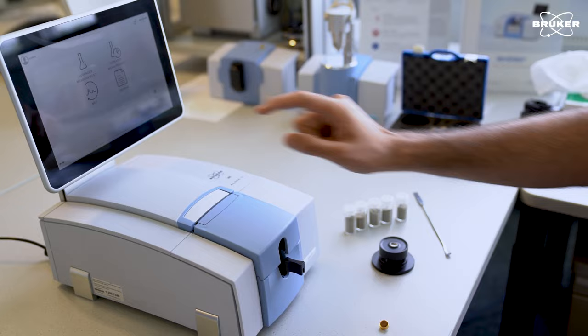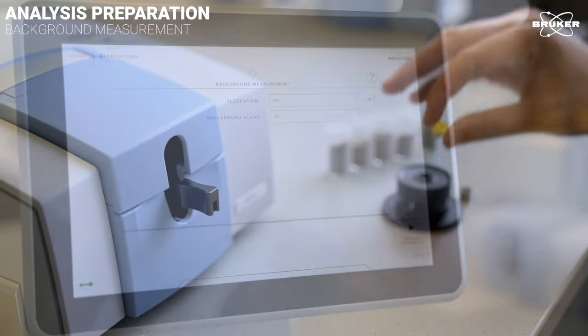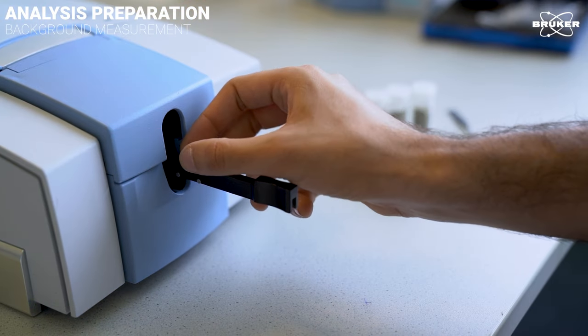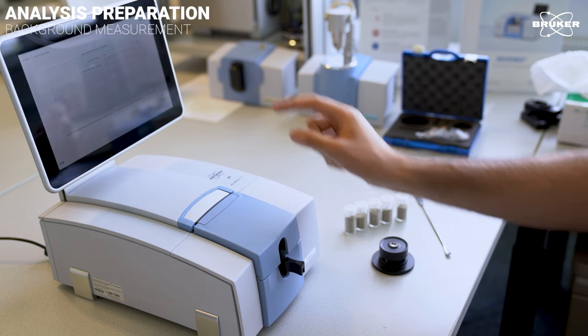But first, we have to measure the background to prepare the device for the actual sample measurement. We can then use this background for multiple samples in quick succession. A gold mirror will serve as a reference and we place it into the DRIFTS module. Next, we follow Bruker's simple step-by-step guide in the Opus Touch software.